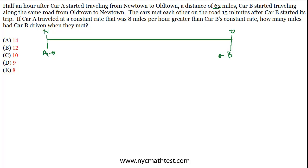They meet each other on the road 15 minutes after car B starts. So that means B is only on the road for 15 minutes. Car A traveled at a constant rate that was 8 miles per hour greater than car B's rate. So we know something about the relationship of their rates. The question is, how many miles has car B driven when they met?